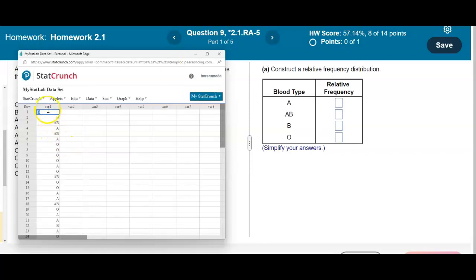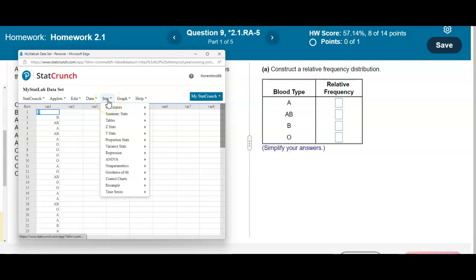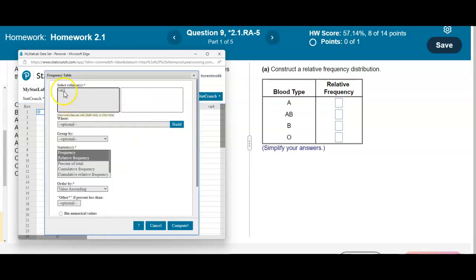So now you can see that the categorical or qualitative data is located in variable one. So we're going to go ahead and select Stat, go down to Tables, and select Frequency. Now we're going to select our column and then we're going to select Relative Frequency.